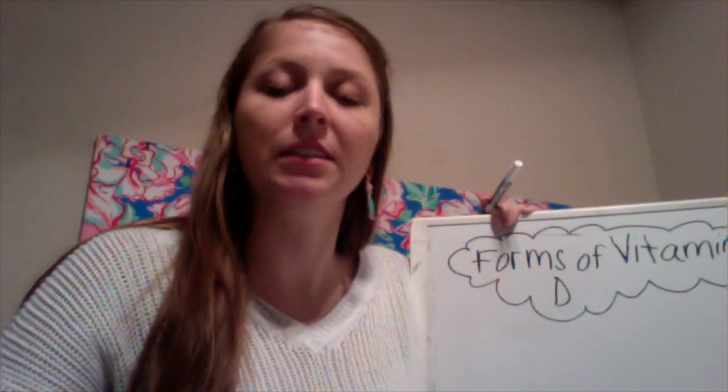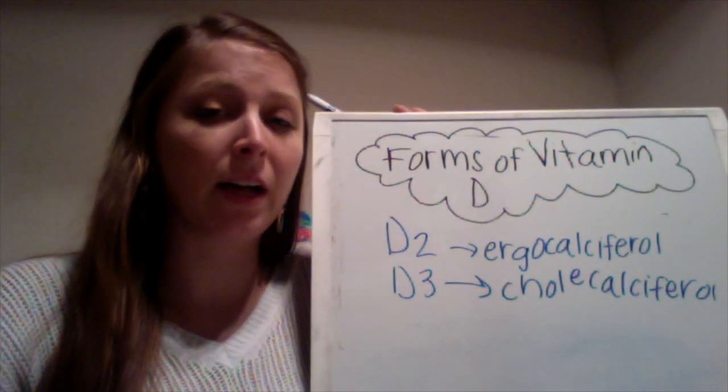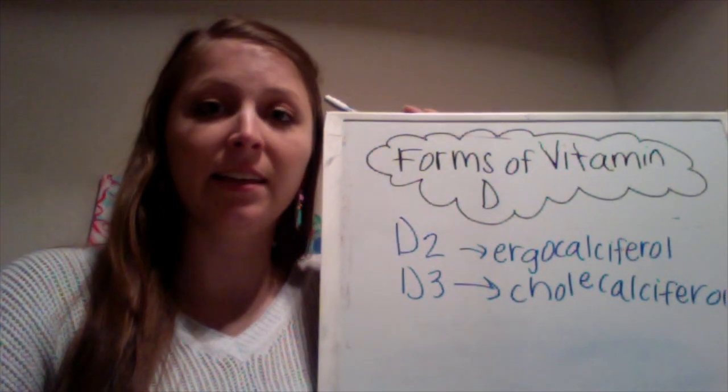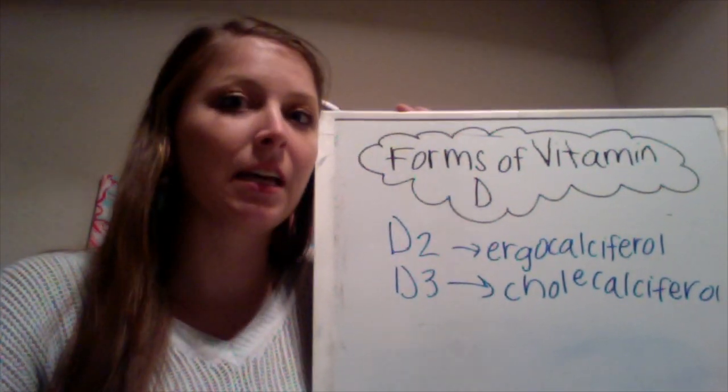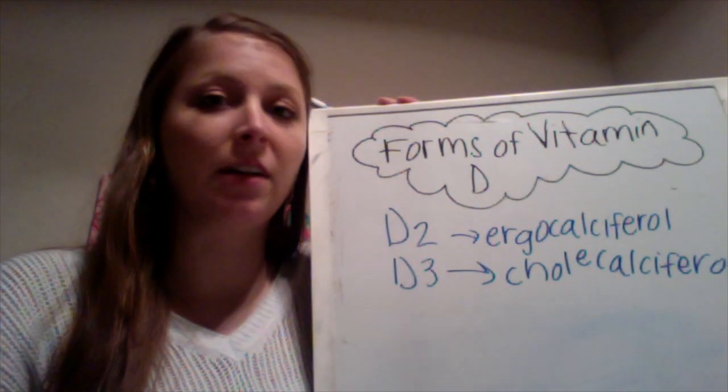The next fat-soluble vitamin we're going to talk about is vitamin D, which is also referred to as calciferol. Vitamin D increases the absorption of calcium in the small intestine and also promotes mineralization and growth for the bones. We get vitamin D from the sun by converting D2 and D3. D2 is ergocalciferol, which is found in yeast, fungi, and plants. D3 is cholecalciferol, which is found in animal tissues.